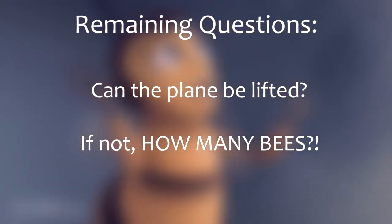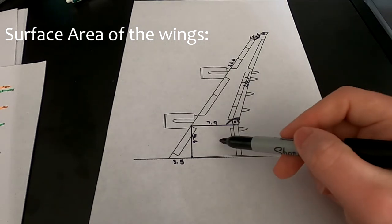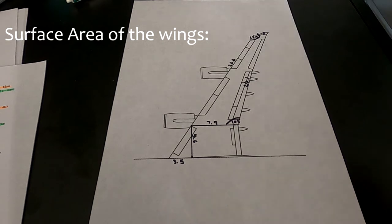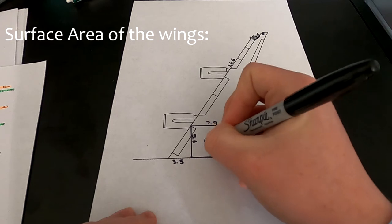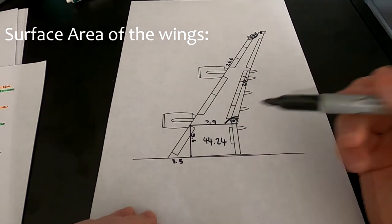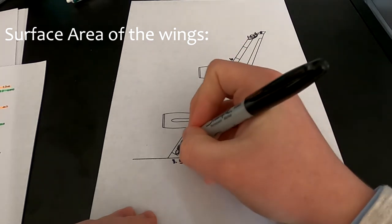We only have to work out the area of one wing and then double it, as one wing is a mirror of the other. To find the area of the wing, I'm going to divide it into three different shapes. At the top, we can make a rectangle and a triangle. These are easy to work out. The rectangle sides are 5.6 meters by 7.9 meters, which gives us an area of 44.24 meters squared. The triangle has the same 5.6 meter side as the rectangle, and the other side is 3.5 meters, which gives us an area of 9.8 meters squared.